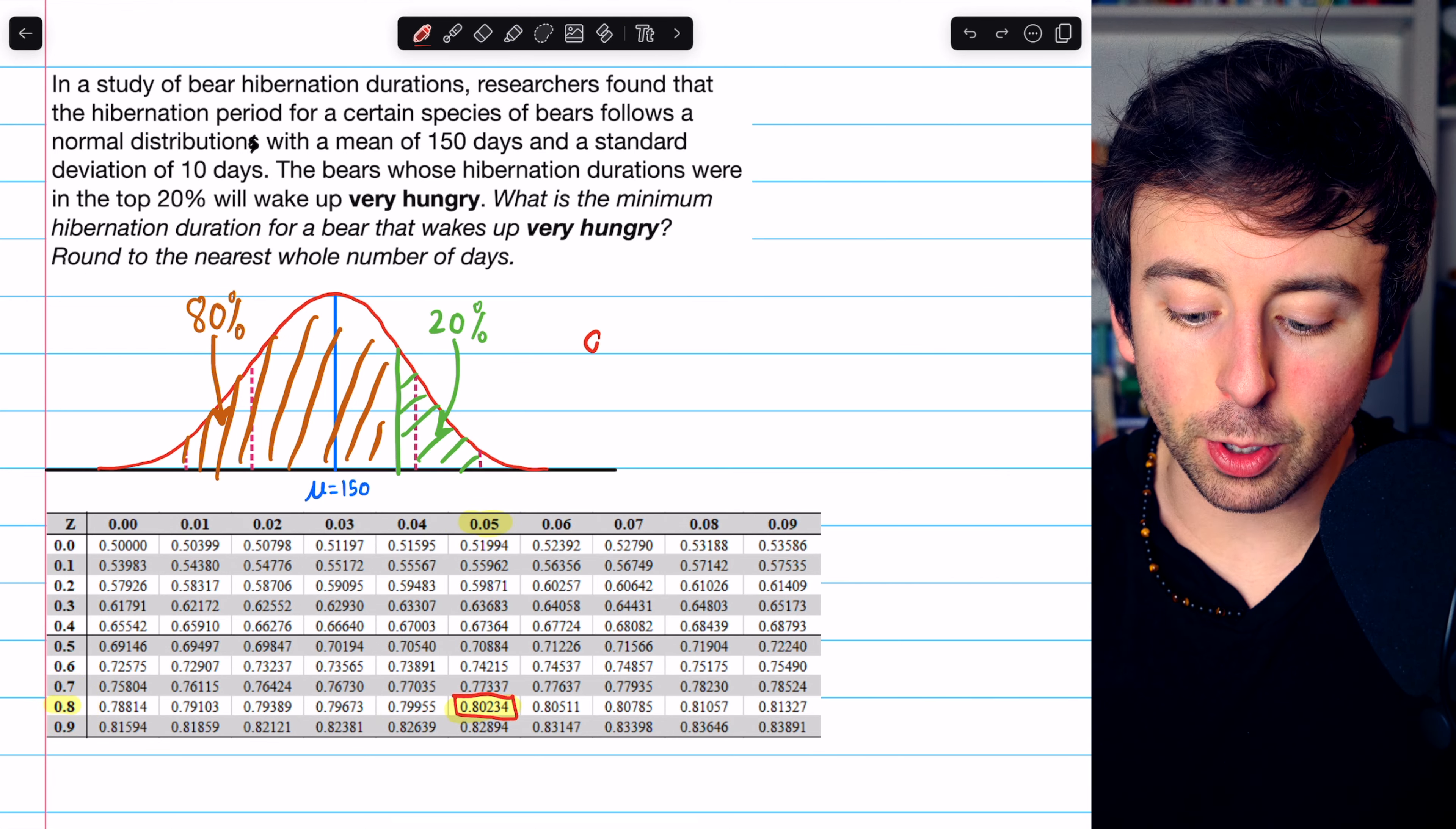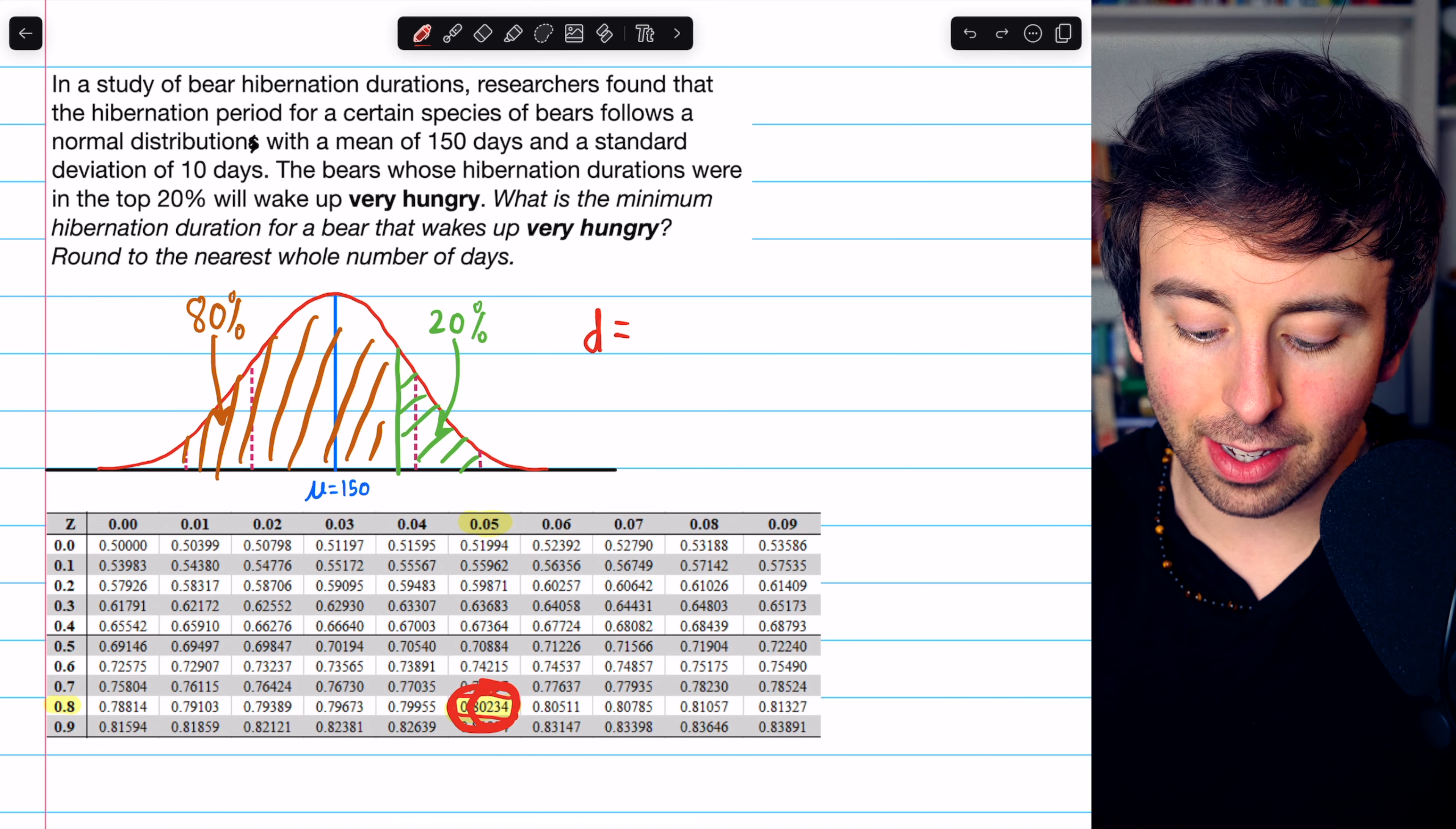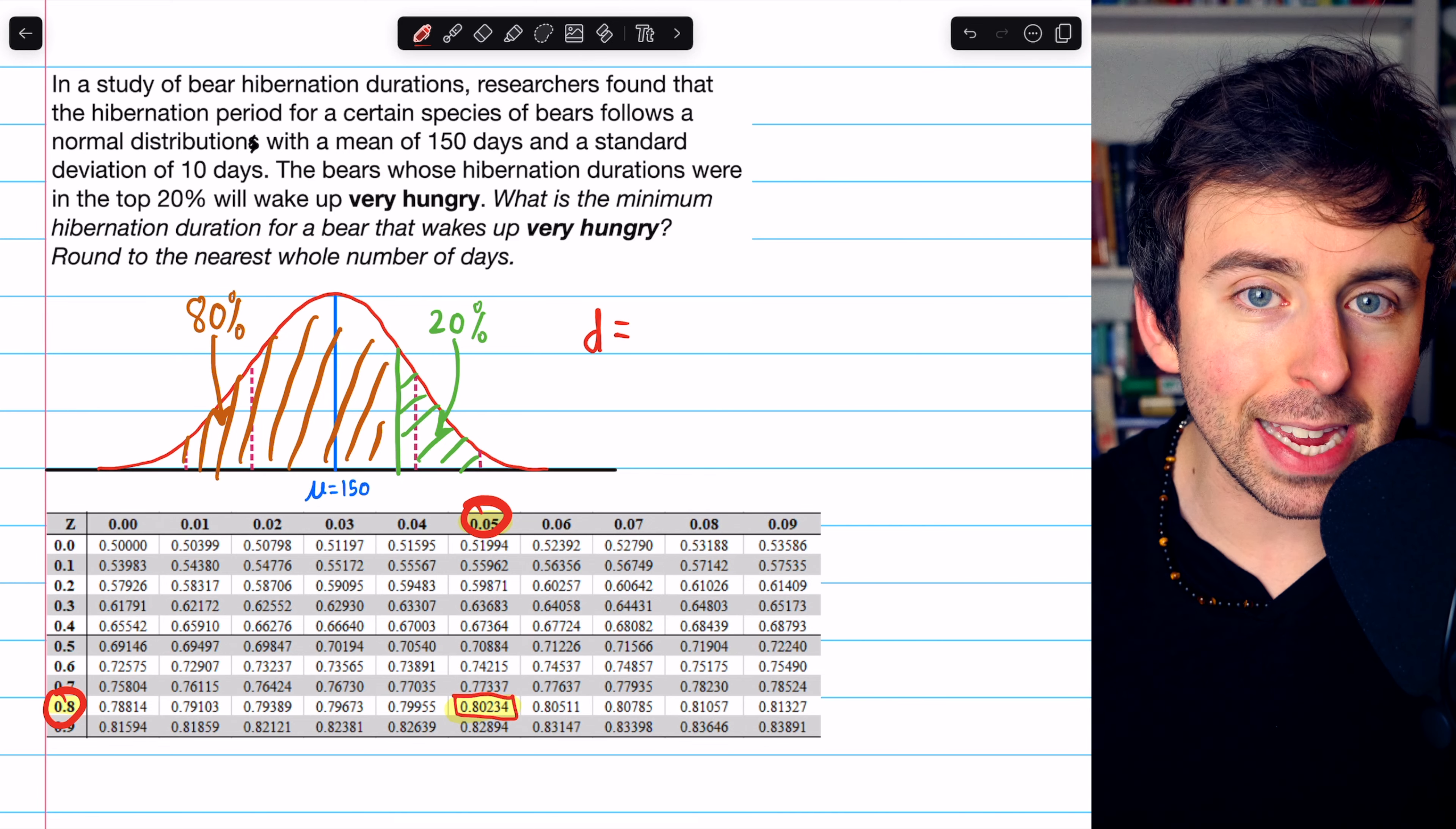So what is the minimum hibernation duration for a bear that wakes up very hungry? Well, it has to be in the top 20%, which means it has to have 80% of bears below it, which means it has to have a z-score of 0.85. That means it's 0.85 standard deviations above the mean.